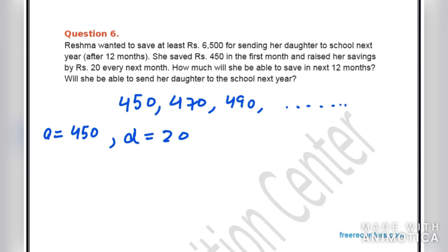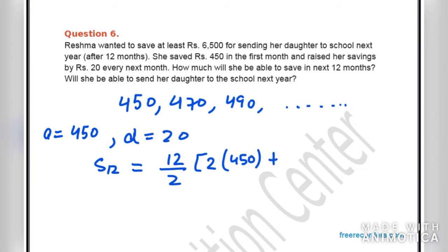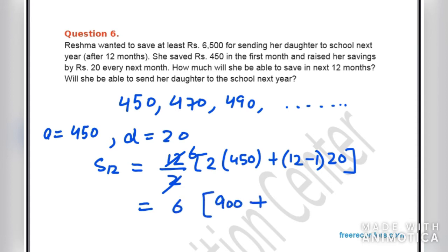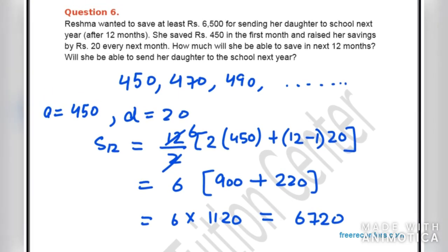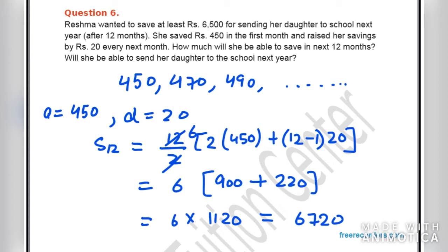We need to find S12. S12 = 12/2 × (2×450 + 11×20) = 6 × (900 + 220) = 6 × 1120 = 6720. She can save ₹6,720 in 12 months. Since this exceeds the required ₹6,500, yes, she will be able to send her daughter to school next year.